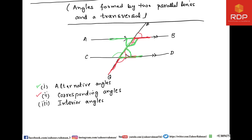The F shape can also be a flipped version — if it is pointing on this side or on that side, in both cases the corresponding angle concept yields the same result. Similarly, you can also find a flipped Z shape on the other side — that is also a valid alternate angle.